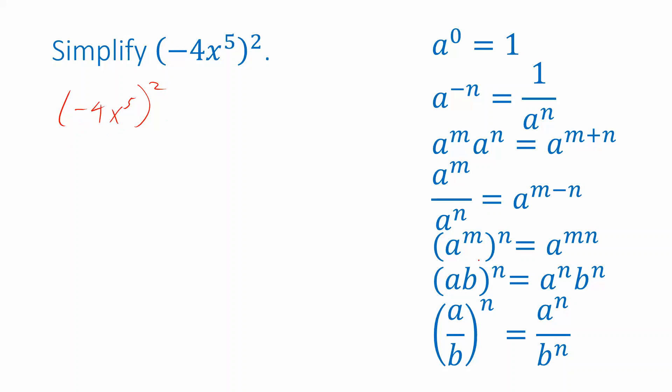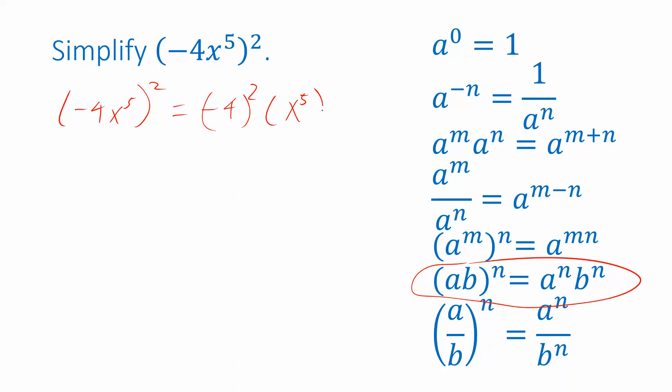And that looks like this property right here. So if we apply that property, it's telling us basically that we can distribute the exponent to each of the factors inside of the parentheses. If we do that, I can think of this as negative 4 squared times x to the fifth squared.